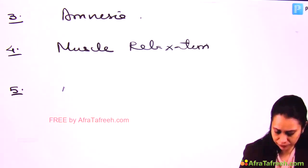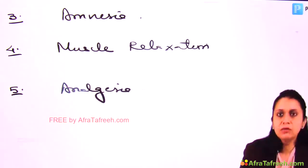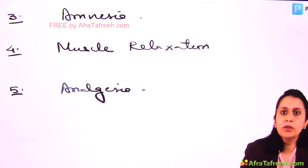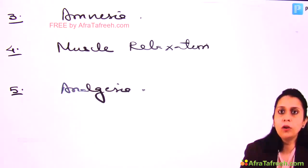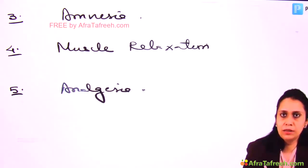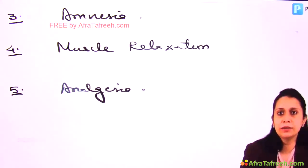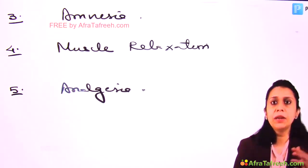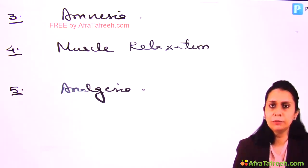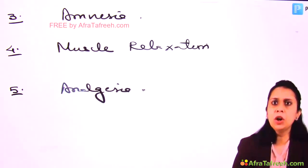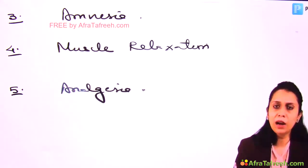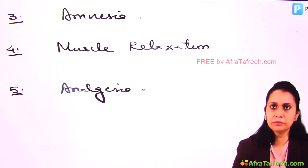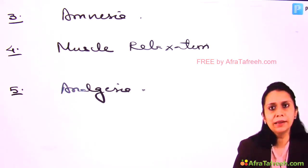Fifth is Analgesia. The drugs we use for producing loss of consciousness do not necessarily provide analgesia. The path of consciousness and the path of pain are different. A drug may act on the path of consciousness but may not act on the path of pain. So the patient may become unconscious but may still feel pain if I do not give an analgesic agent. We have to give drugs which also provide analgesia.